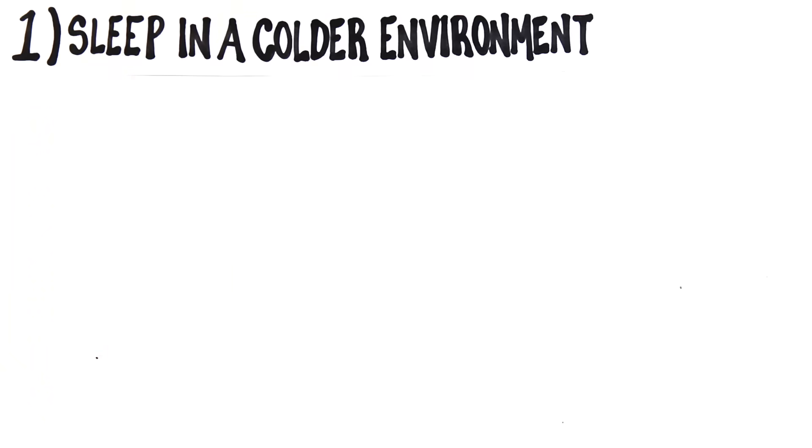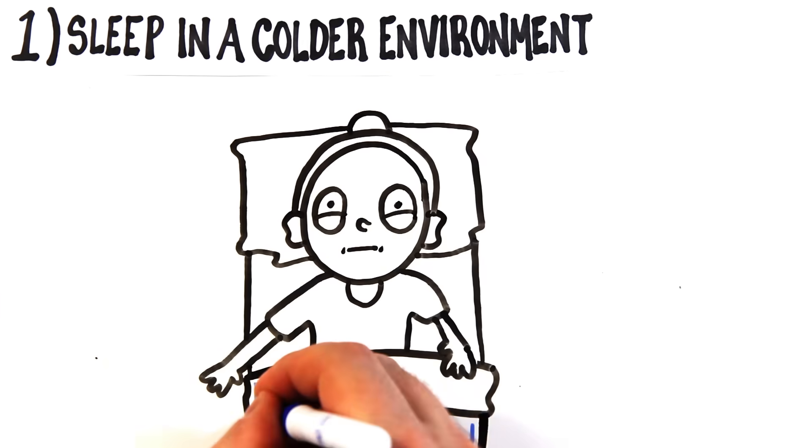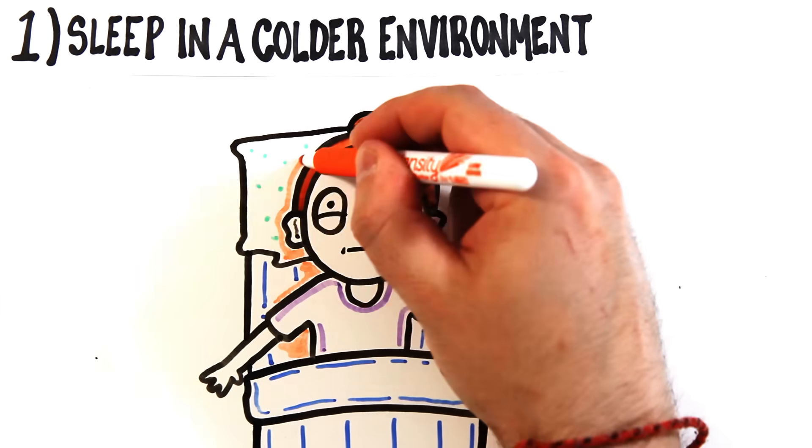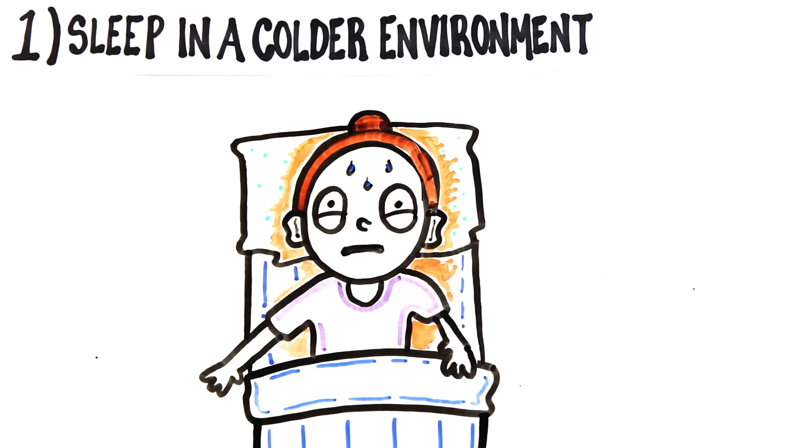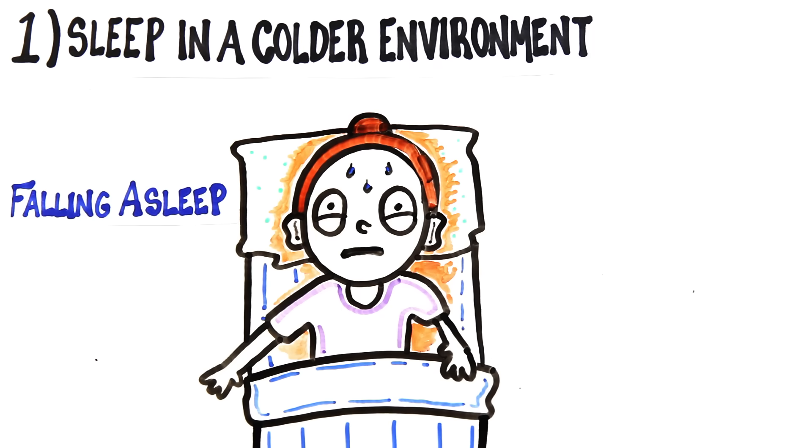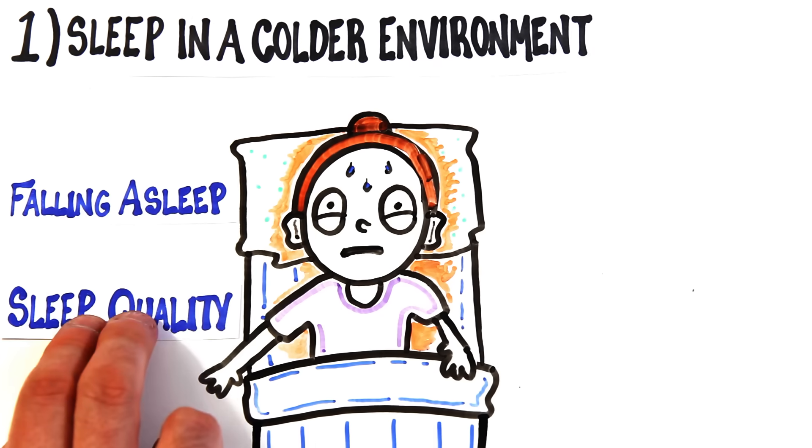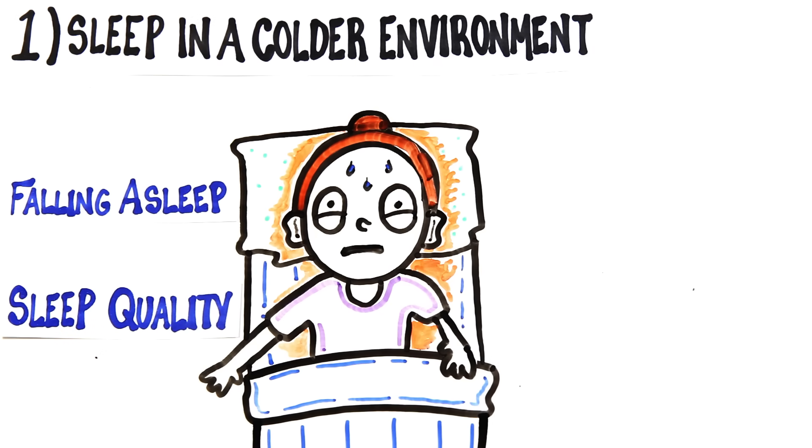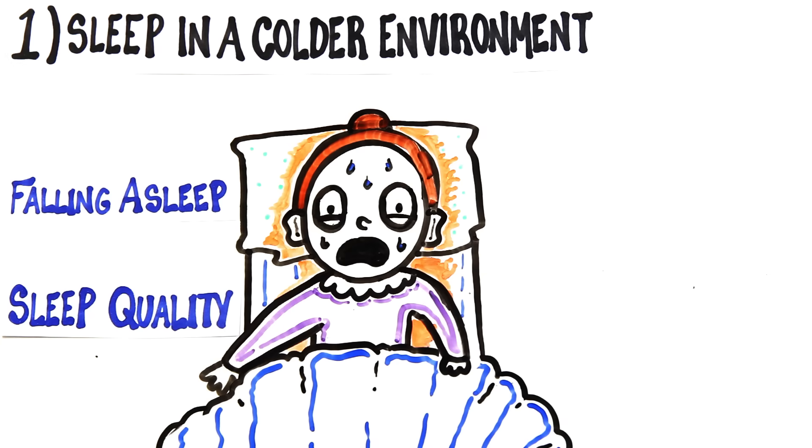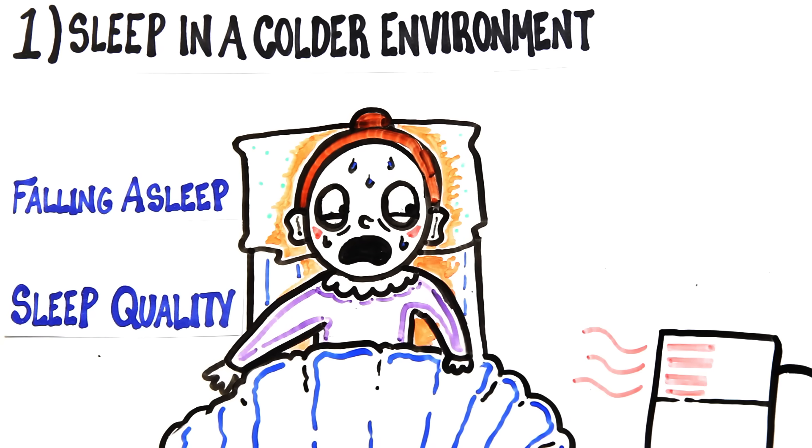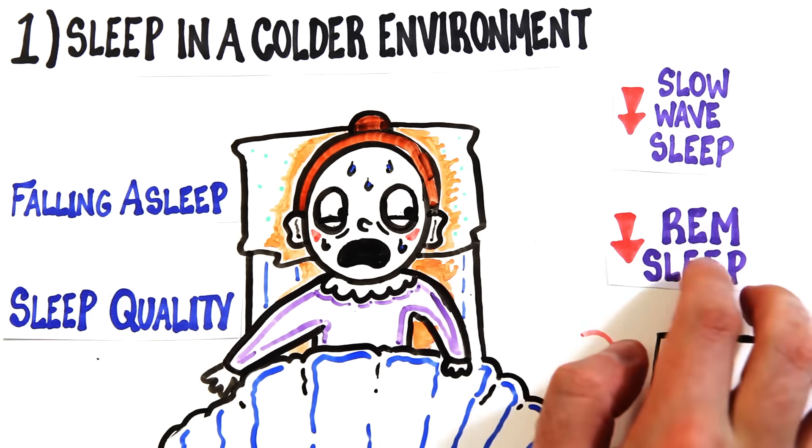Number one is to sleep in a colder environment. Your thermal environment, especially surrounding your head and body, is perhaps the most under-appreciated factor determining not only the ease with which you'll fall asleep tonight, but also your sleep quality. Whether you're overheating because of heavy blankets, pajamas, or just a hot room, it's been shown to decrease slow-wave sleep and REM sleep.